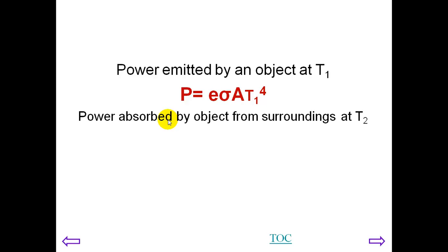There will also be power absorbed by the object from the surroundings, which is at another temperature T2. That power which is absorbed equals the emissivity, sigma, and area, the same values, but on the surrounding temperature to the power of 4. If there's a difference in temperature, you will get a difference in power, so the temperature will either rise or go down.